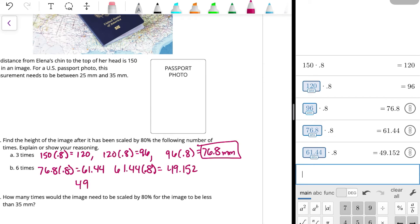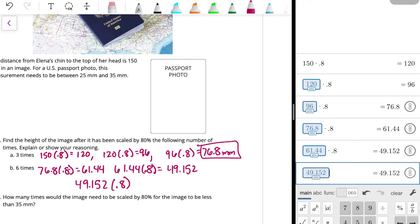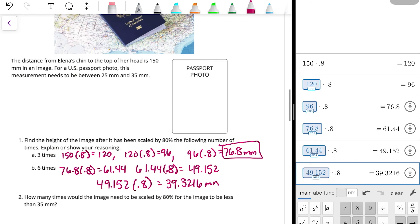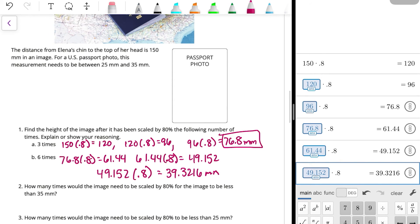So that's five times. So then we have one more time, 49.152 times 80%. So we'll come back to the calculator, multiply that by 80%. And we get 39.3216 millimeters.